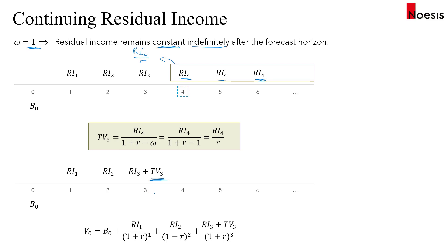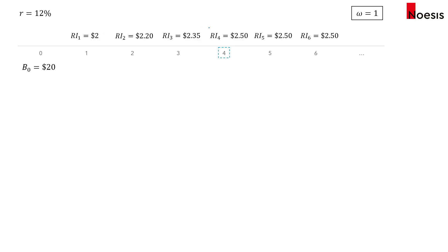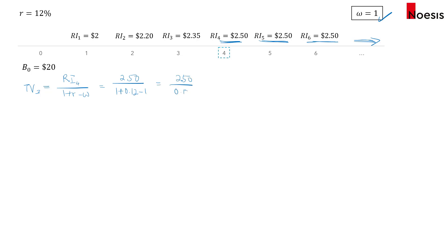This transforms the whole stream of residual income into a terminal value. With omega = 1, the residual income is $2.50 forever after the forecast horizon. The terminal value in period three is RI4 / (1 + r − omega) = 2.50 / 0.12, which equals approximately $20.833.